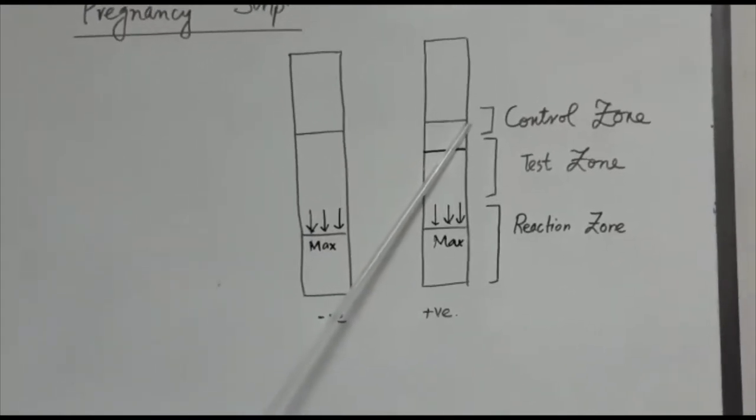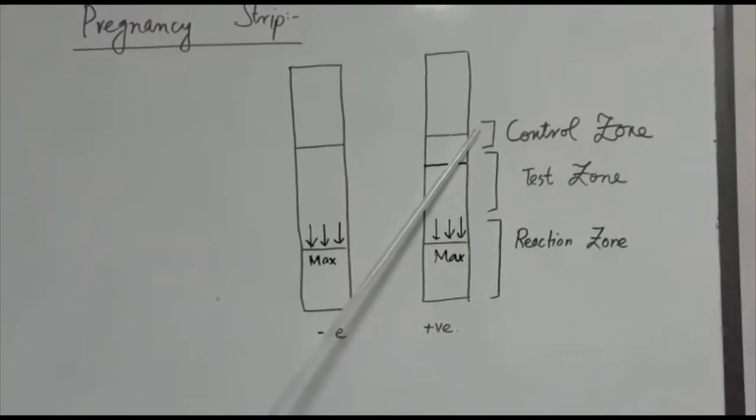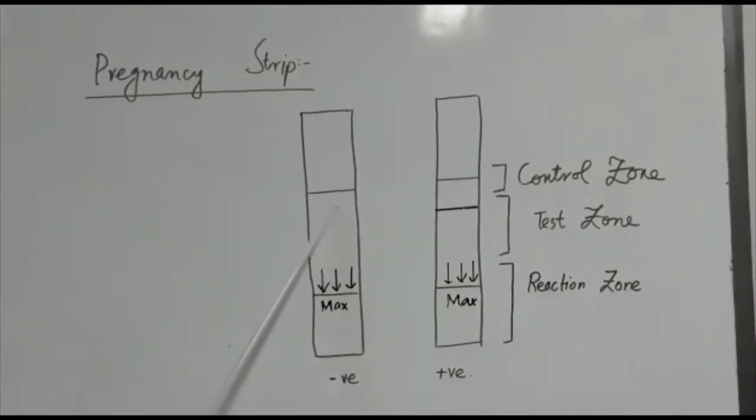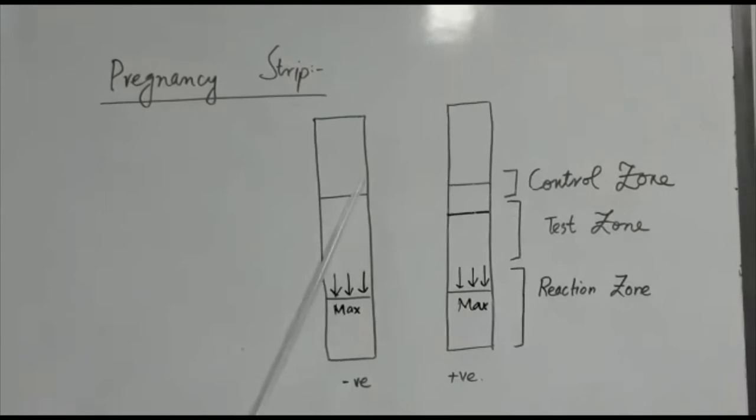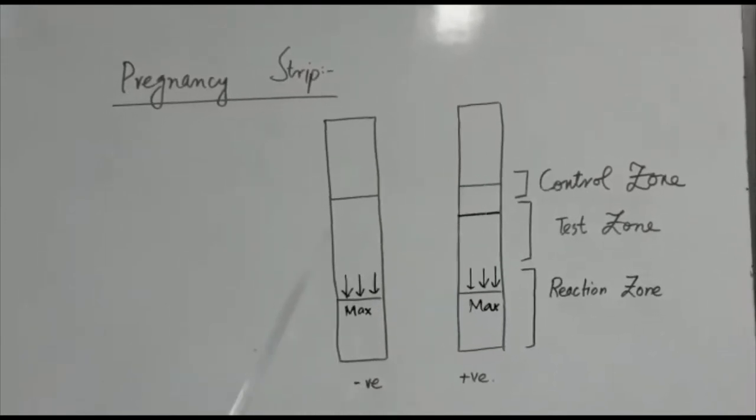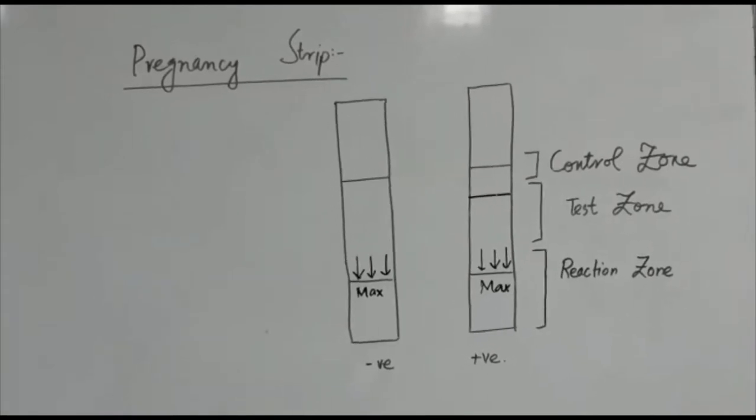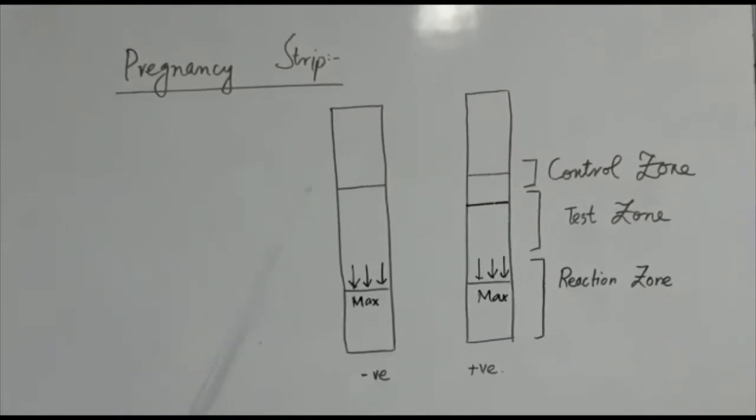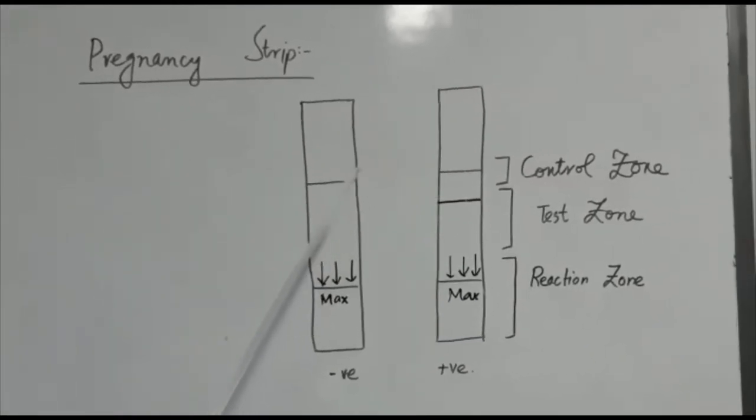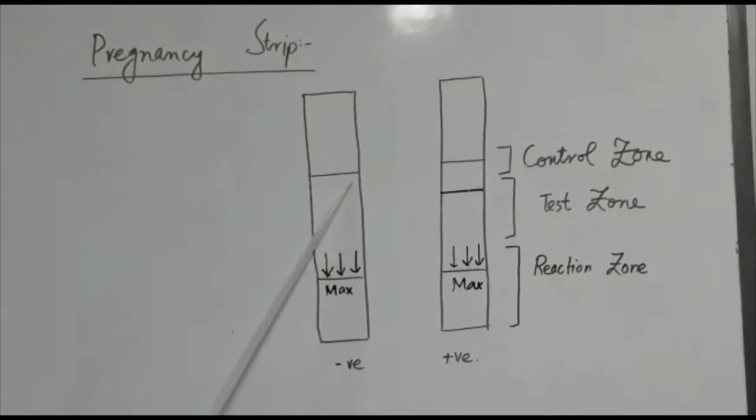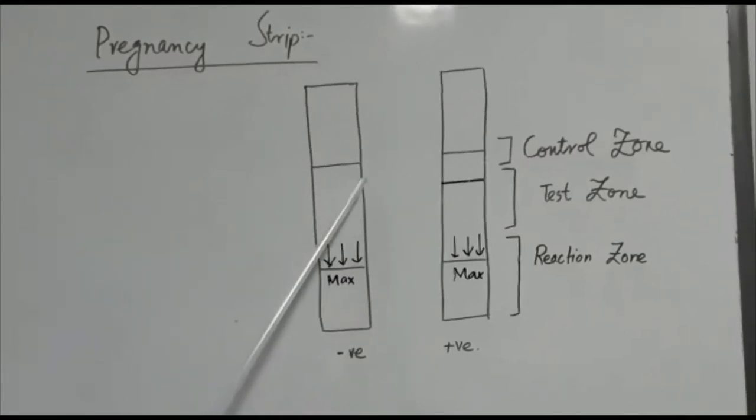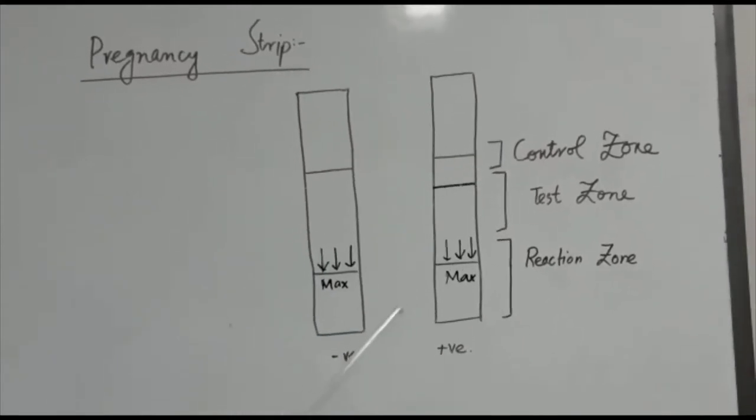The third zone above the test zone is control zone. It shows a colored line both in the cases of a negative and a positive result. The control zone serves to validate that the test has been performed successfully.